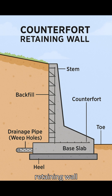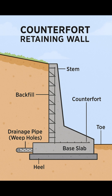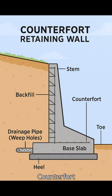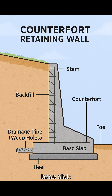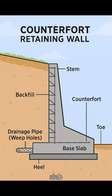Counterfort retaining wall. Stem — the vertical wall retaining the backfill. Backfill — the soil held behind the wall. Counterfort — diagonal braces connecting the stem to the base slab, reducing bending moments. Base slab — the horizontal footing that supports the structure.